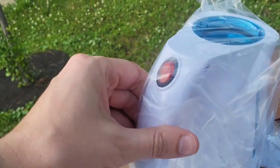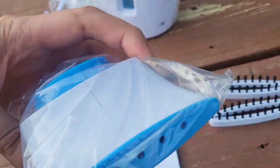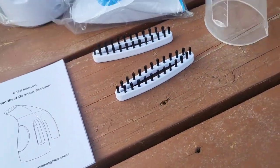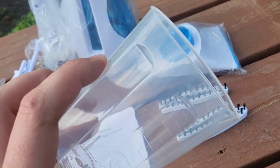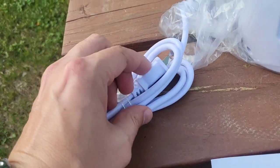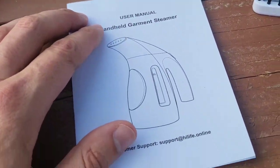Here in the box we see the steamer itself, a tip for it for steaming, some attachable ends with brushes for the tip, a water fill cup right here with measurements on it. Got the plug-in at the end of the steamer here, nice long cord, and the instruction manual itself.